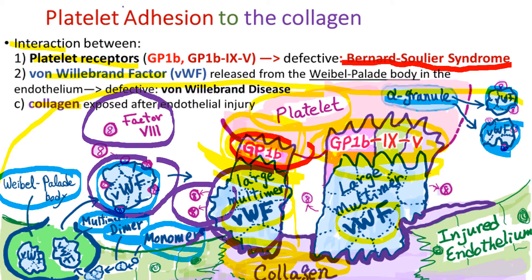Similarly, when von Willebrand factors are deficient, it causes von Willebrand disease. Patients with von Willebrand disease have low factor VIII levels because factor VIII is carried by von Willebrand factor — when von Willebrand factor is deficient, so is factor VIII. Patients with von Willebrand disease have prolonged PTT due to low factor VIII levels, which is not seen in Bernard-Soulier syndrome.